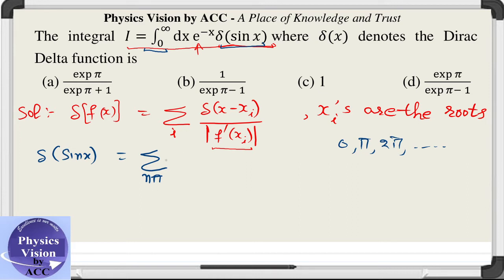And what it will give you? It will give us the values as summation of delta(x minus xi), or x minus n pi, divided by cos of xi. Cos of n pi is either 1 or plus minus 1. Cos of n pi are plus minus 1 raised to the power n, and the mode of it gives you plus 1 always. So this is just summation of delta(x minus n pi).